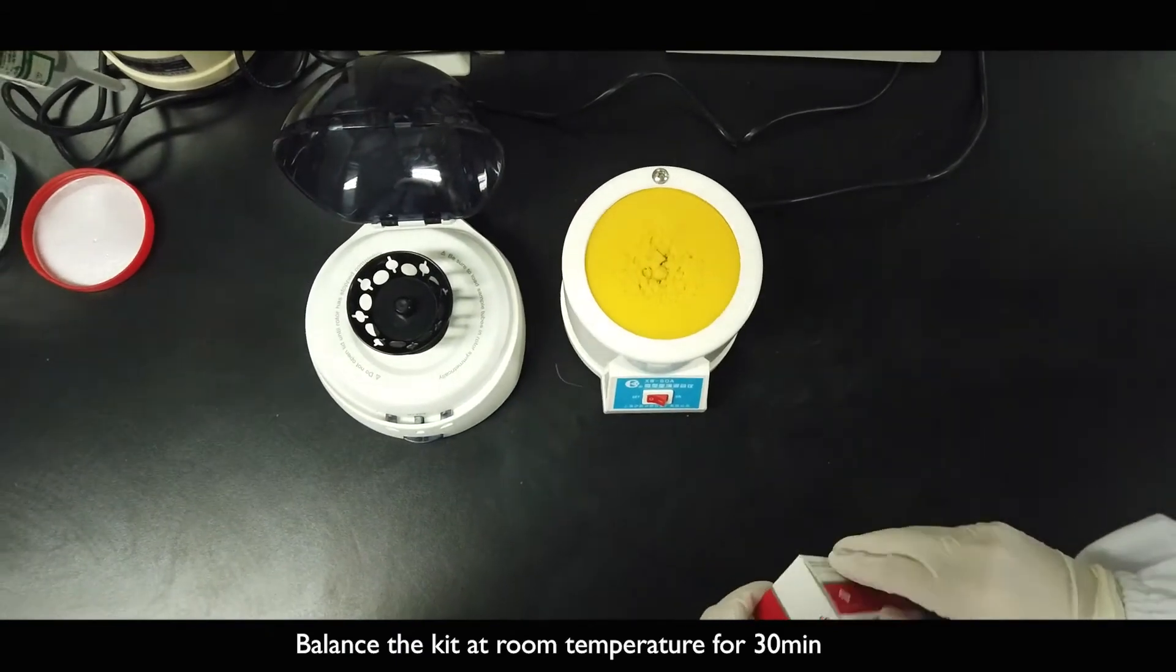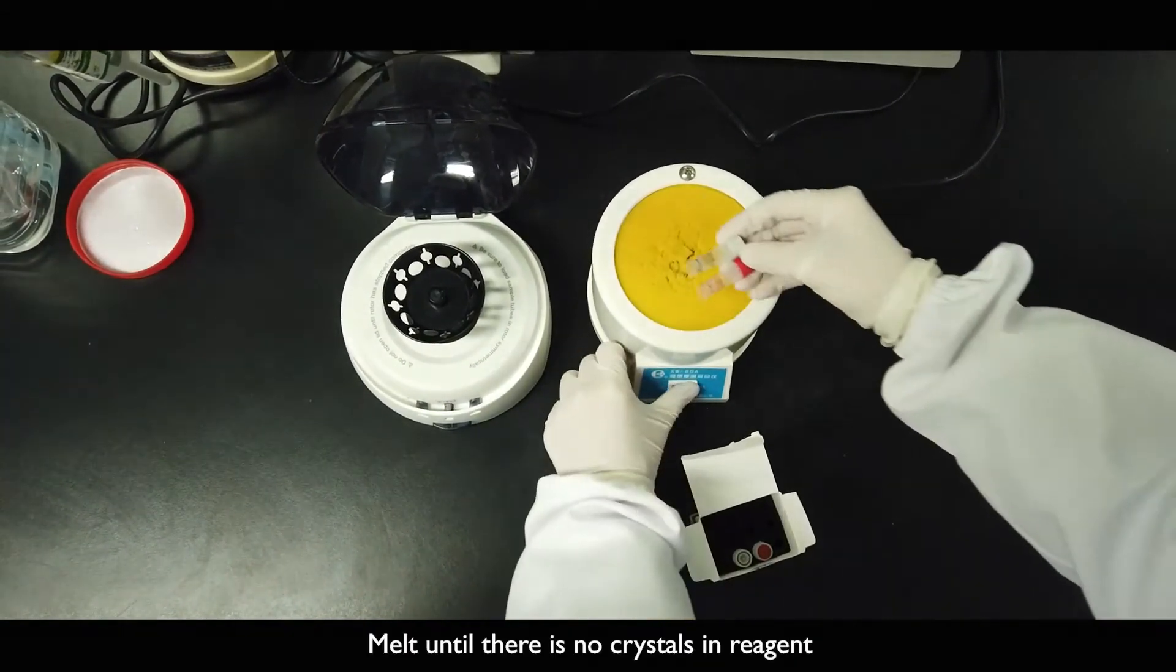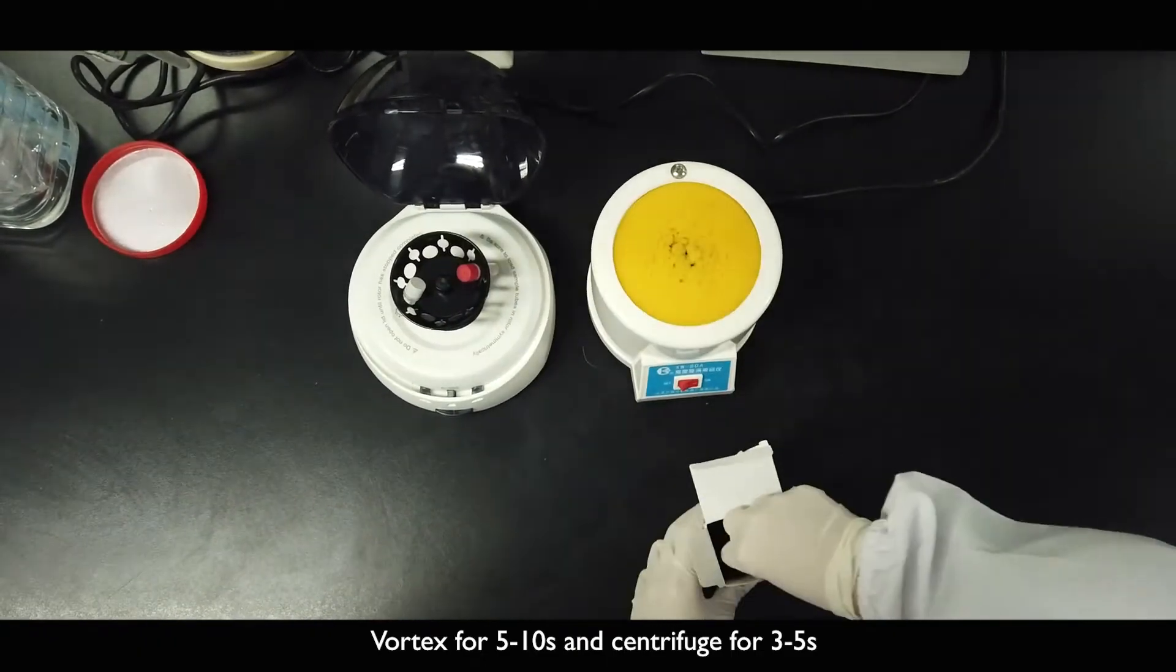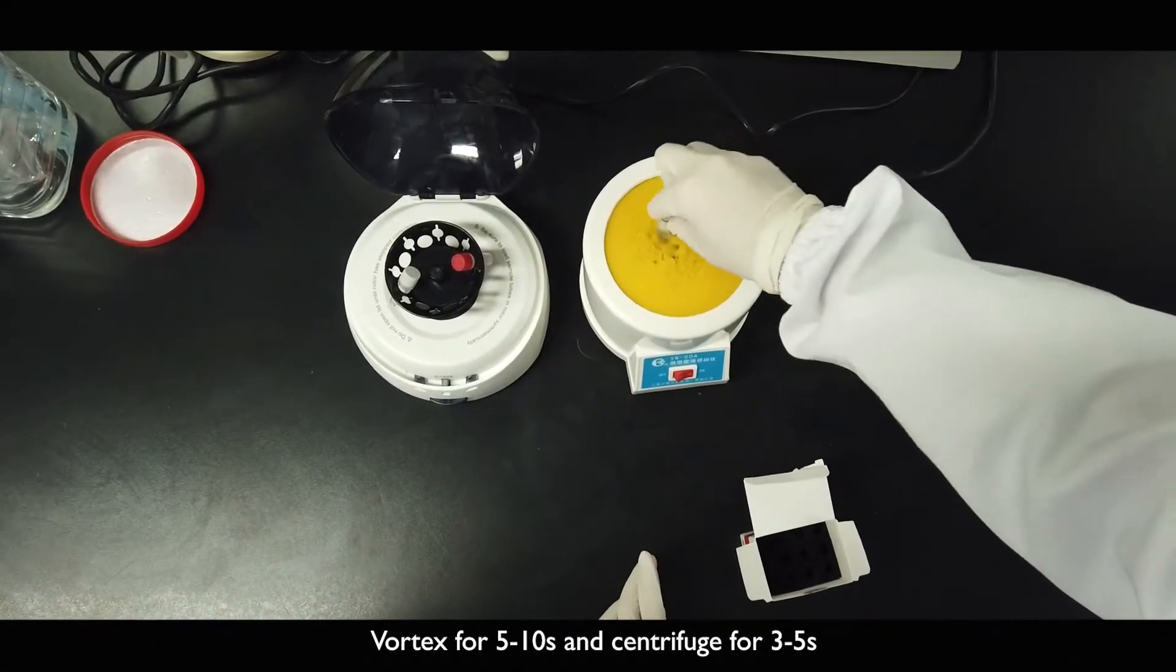Balance the kit at room temperature for 30 minutes. Melt until there are no crystals in the reagent. Vortex for 5 to 10 seconds and centrifuge for 35 seconds.